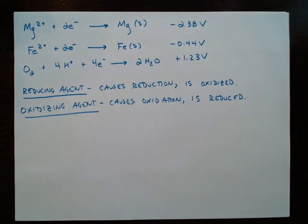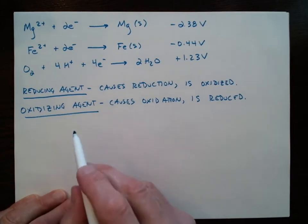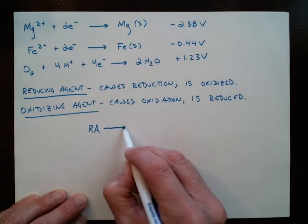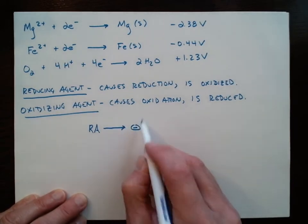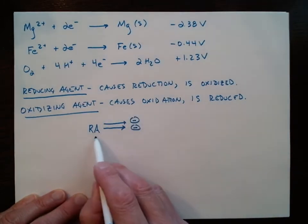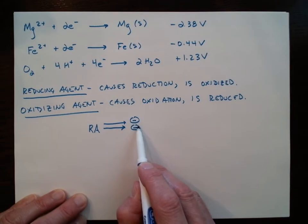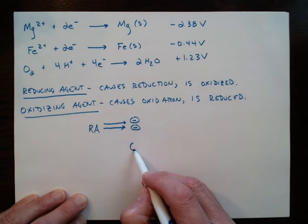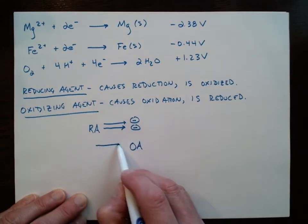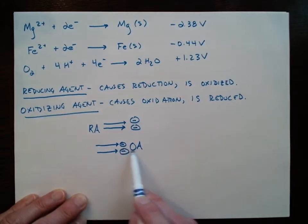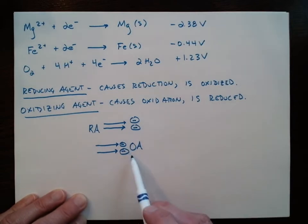I'm going to draw a couple pictures here to get us to think about this. If I'm a reducing agent, I'm going to cause reduction — that means I'm going to lose electrons, because I have to push these electrons into something to cause reduction. It's like I'm an electron gun if I'm a reducing agent, and because I'm losing these electrons, I must be oxidized. On the other hand, if I'm an oxidizing agent, I must pull electrons from something — it's like I'm an electron vacuum. So I'm causing something to be oxidized, but I myself am reduced because I'm pulling electrons in.